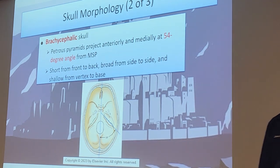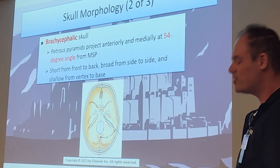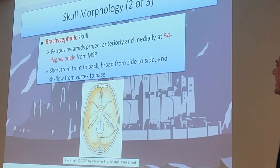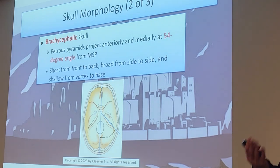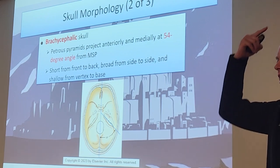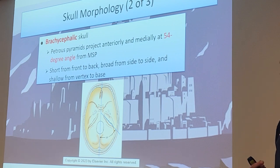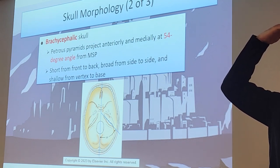Brachycephalic has the distinct difference from mesocephalic in that the petrous pyramids will project anterior and medial at a 54-degree angle from the MSP. Basically the skull will be short from front to back, broad from side to side, and shallow from vertex to base - meaning top of the head to the bottom.